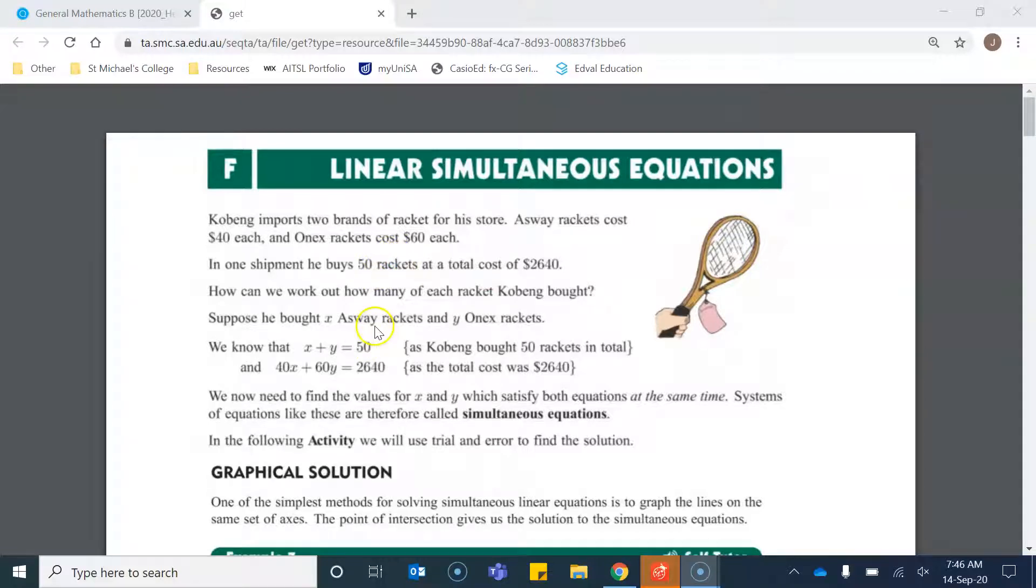Now we don't know how many of them are the Asway rackets and we don't know how many of them are the Onyx rackets. What we need to do is come up with two sets of equations which connect the two variables. Suppose that we have x Asway rackets and y Onyx rackets. Now that we've defined these variables x and y, we can come up with a relationship between the two.